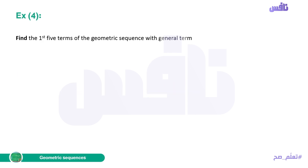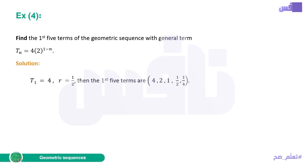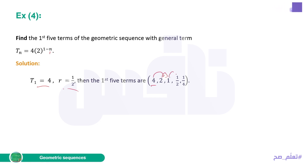Example 4: find the first five terms for Tn = 4 · 2^(1−n). T1: substitute n=1, exponent is 1−1=0, so 2^0=1, giving 4·1=4. R: the negative N means R = 1/2. Starting from 4 and multiplying by 1/2 each time: 4, 2, 1, 1/2, 1/4.